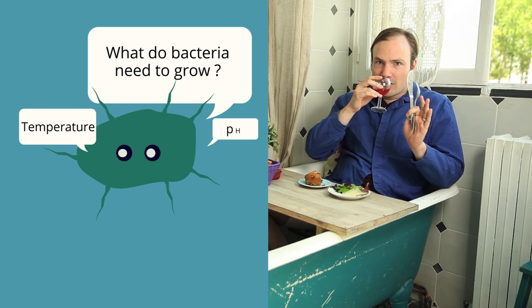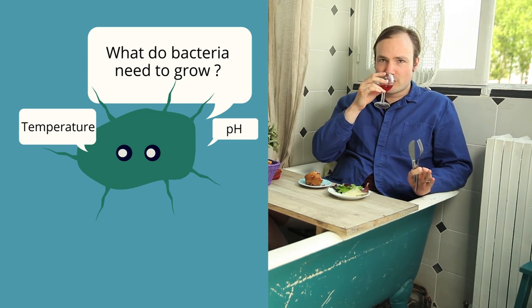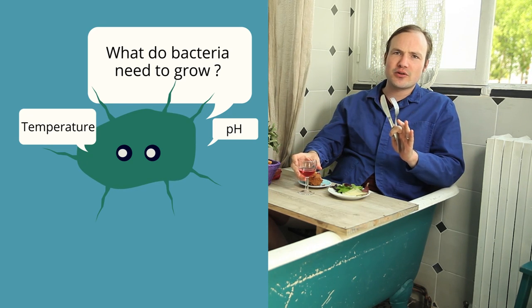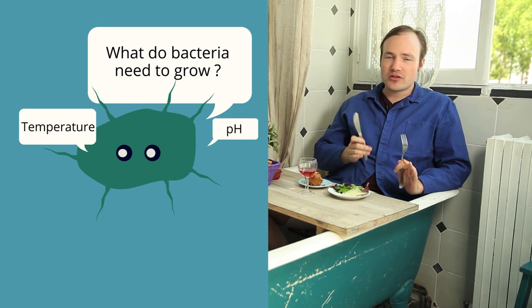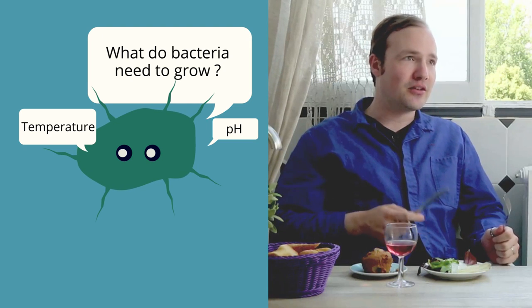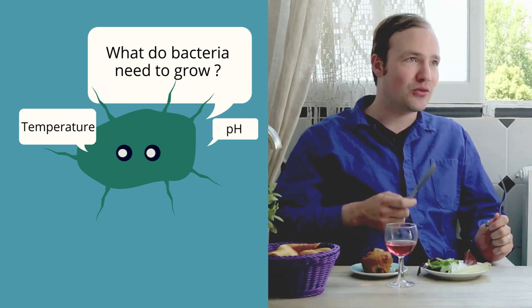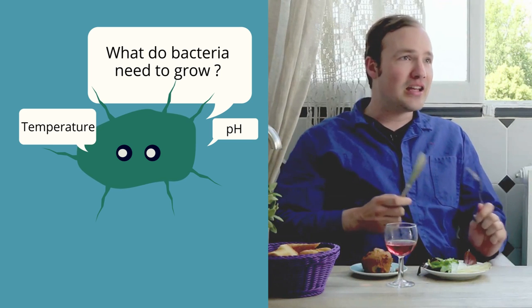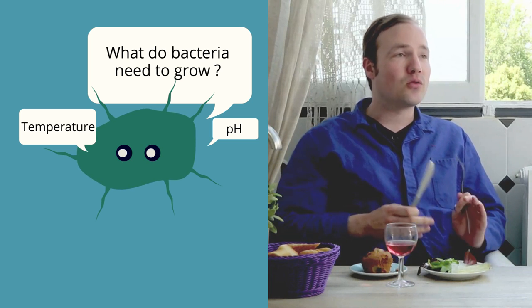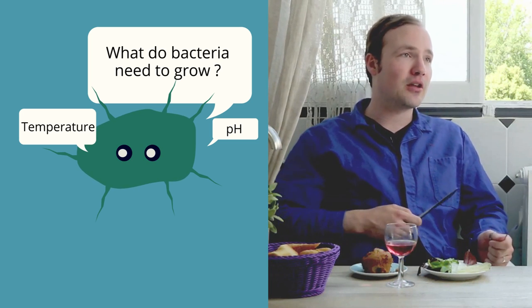pH. Normal bacteria like a neutral pH around 7. There's plenty of examples of bacteria that prefer slightly acidic or slightly basic conditions, and there's extremophiles that can live in concentrated sulfuric acid. In general, every microbe prefers a specific range of pH values, and we keep that in mind when preparing media for them.